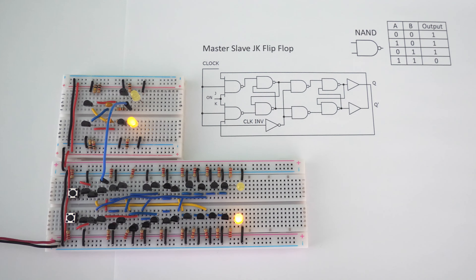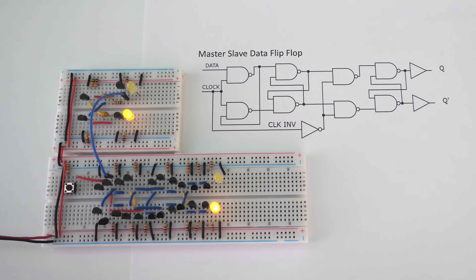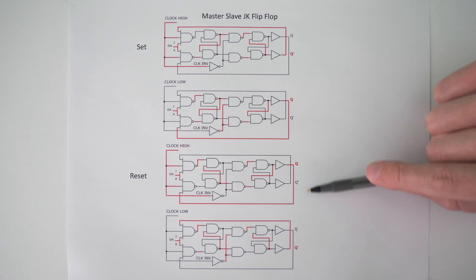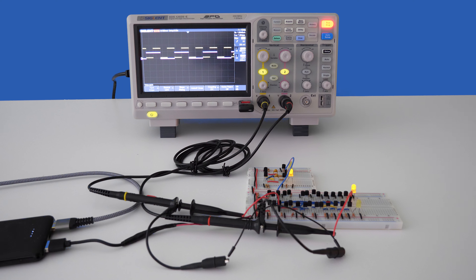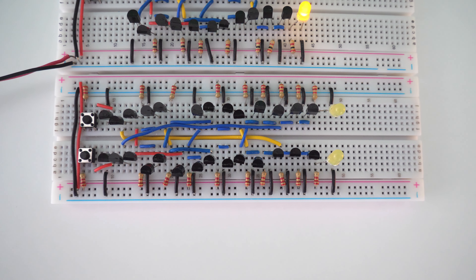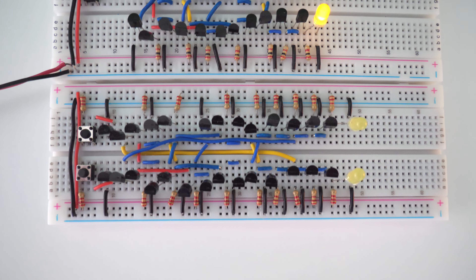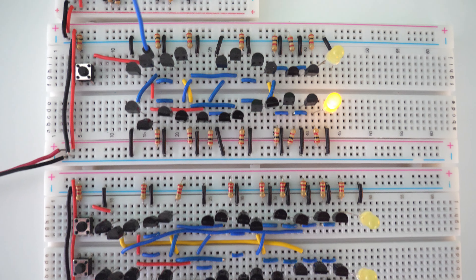Hello, my smart and talented friends, and welcome to the Global Science Network. Today I am going to show you how to build a master-slave JK flip-flop and a master-slave data flip-flop. As you probably know, we are working on building a 4-bit computer using individual transistors, and then we are going to build artificial neurons as we work our way towards creating non-biological human consciousness.